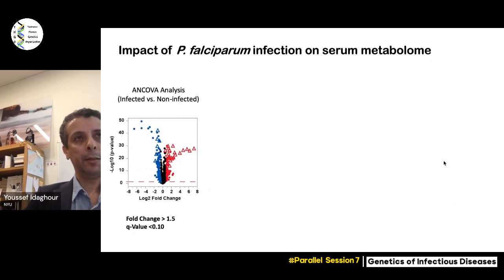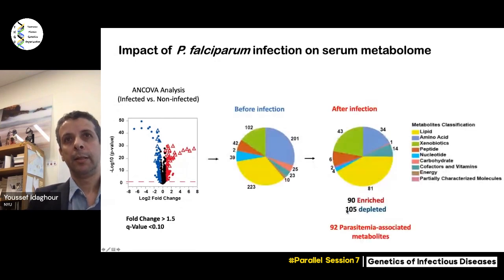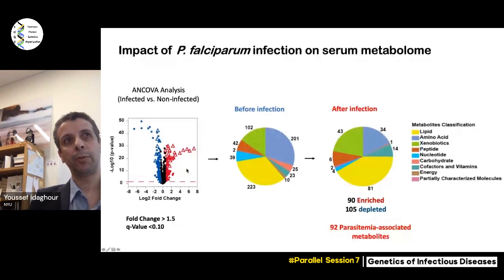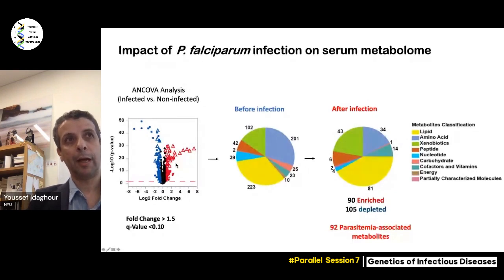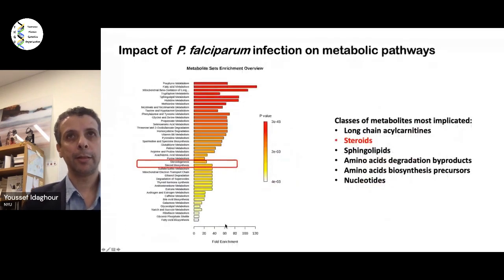We did differential abundance analysis using thresholds of fold change greater than 1.5, and detected 195 metabolites that are either enriched or depleted. Enriched metabolites are shown in red, depleted in blue. Metabolites associated with parasitemia are shown as triangles. Very similar to what we've seen with microRNA, almost all metabolites upregulated during infection are positively associated with parasitemia, and vice versa.